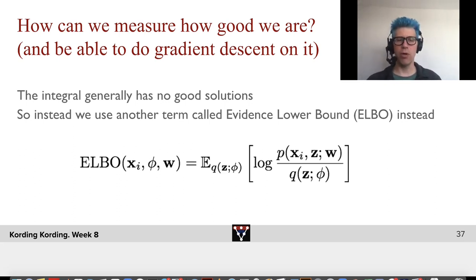Now the ELBO of x_i, phi, and w is the expected value of the probability distribution q introduced by one of the neural networks parametrized by phi of the log of the ratio of the probability of x_i and z for the parameters w and q as a function of z and phi.